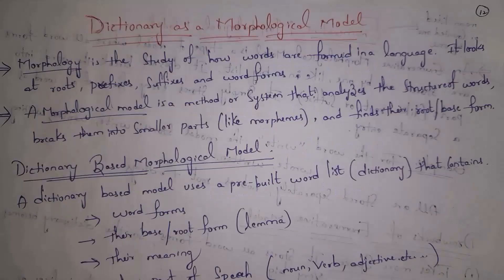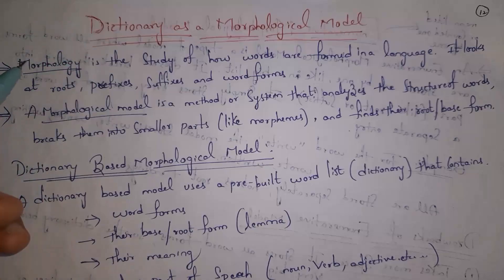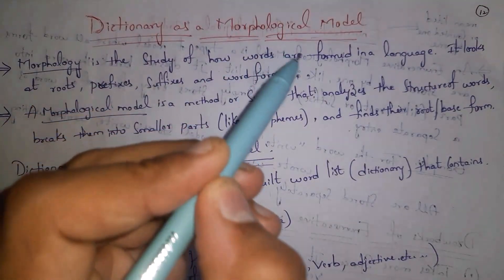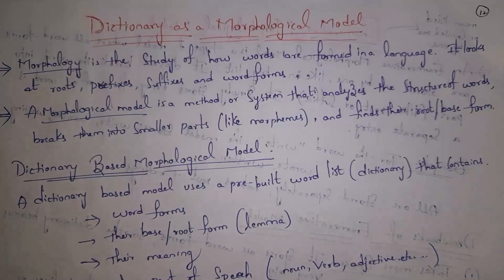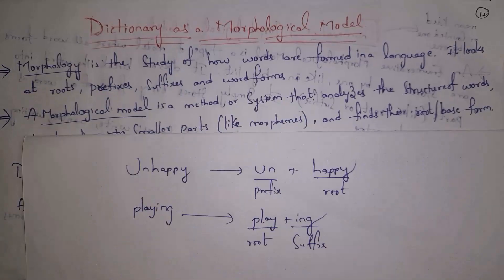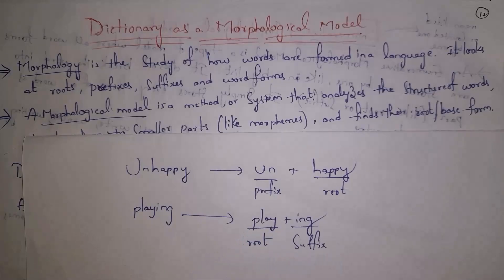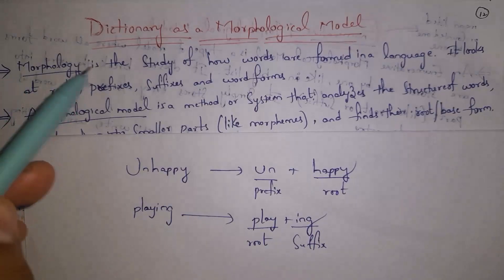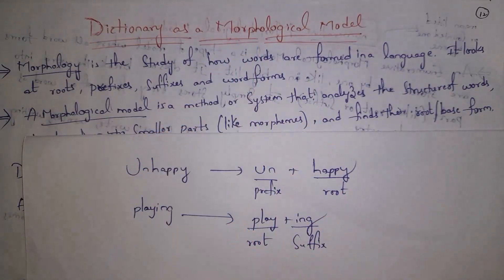Let's get started. First, let's explain dictionary as a morphological model. But before that, you need to know what is morphology. Morphology is the study of how words are formed in a language — it looks at roots, prefixes, and suffixes. For example, 'unhappy' is formed by combining 'un' plus 'happy', where 'un' is a prefix and 'happy' is the root word. Similarly, 'playing' is formed by combining 'play' plus 'ing', where 'play' is the root and 'ing' is the suffix.